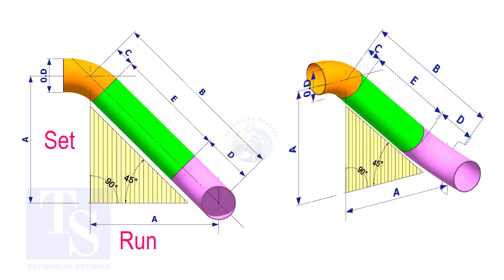In an offset, if the including angle is 45 degree, the set and the run shall be the same. If the value of the set and the run are equal, the value of the travel is set or the run, multiplied by 1.414.